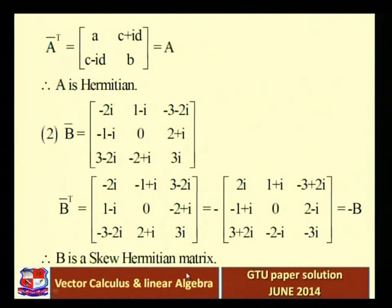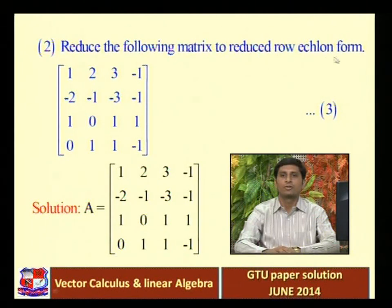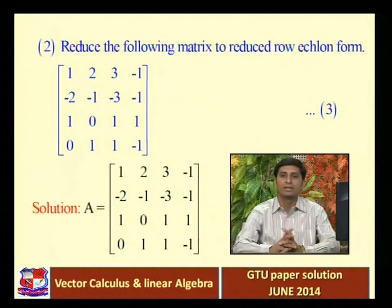This completes question 2a. Next is question 2a, second part: reduce the following matrix to Reduced Row Echelon Form (RREF). This question was asked for three marks. We have a 4×4 matrix. First, let's understand the meaning of Row Echelon Form and Reduced Row Echelon Form.